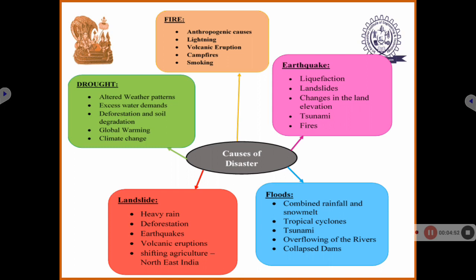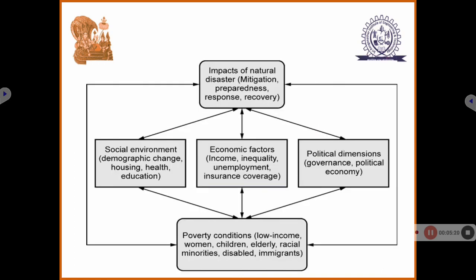Fire can be caused by lightning, campfires, and smoking. We commonly see forest fires caused by campfires, because people who stay in resort areas light campfires and this may end in forest fires. As we discussed before, impacts depend on different age groups and communities, and the area in which they live.